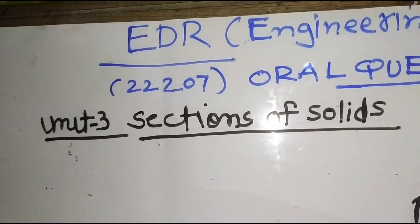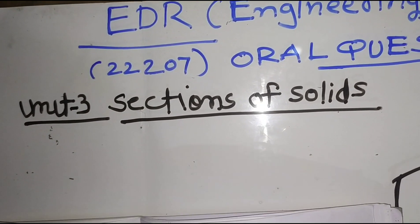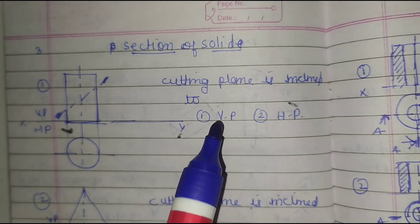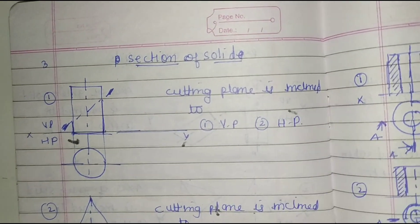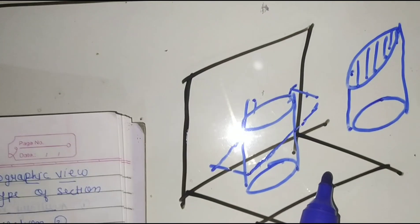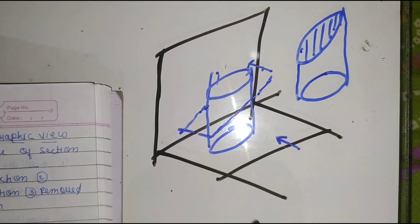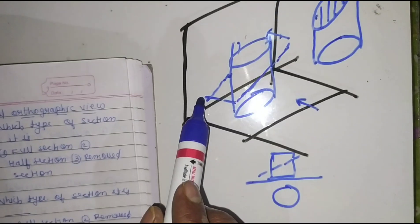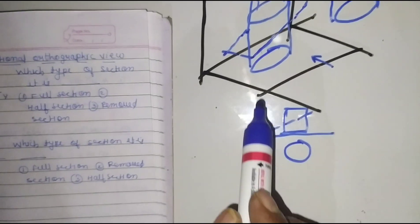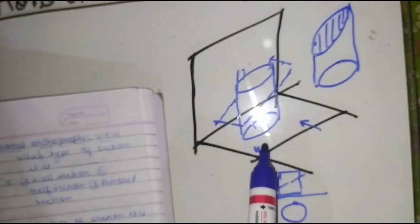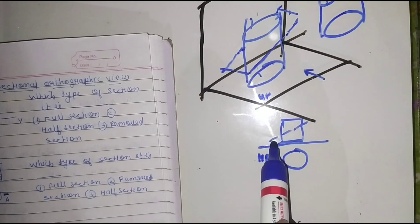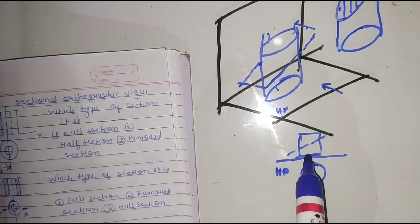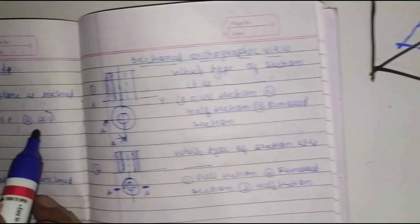Now we will have a discussion on unit three — sections of solids. Here is the question: the cutting plane is inclined to which principal plane, HP or VP? Observing the figure in the front view, this is the top view and the cutting plane is acting here as a single line, like a hacksaw cutting the plane. It is inclined to HP. The answer will be HP.